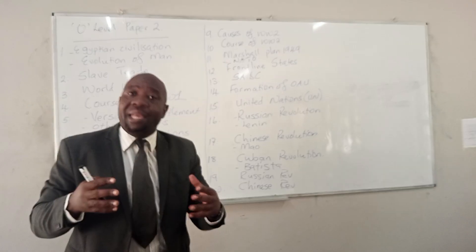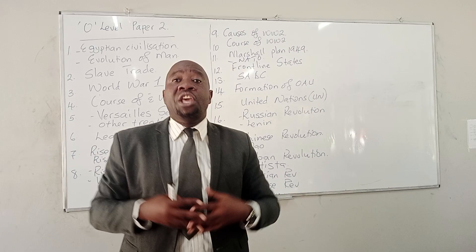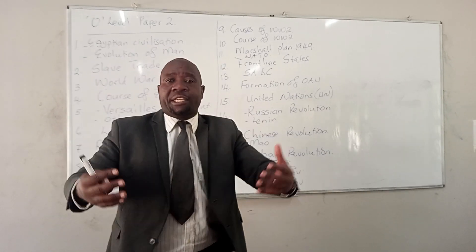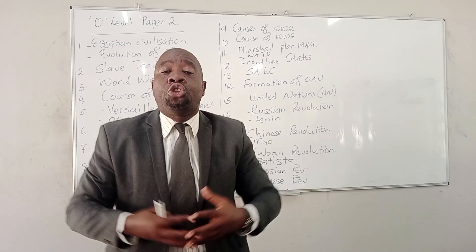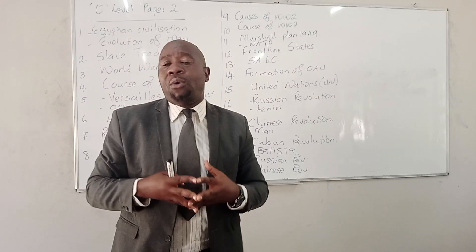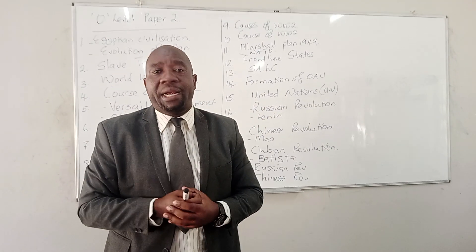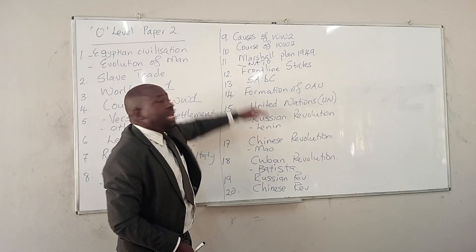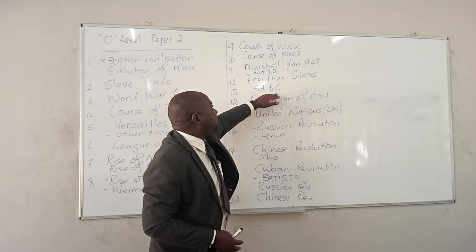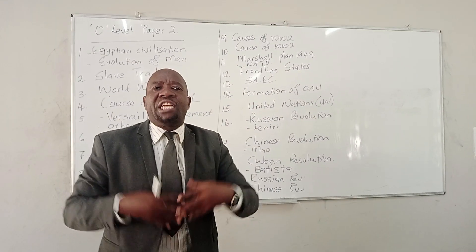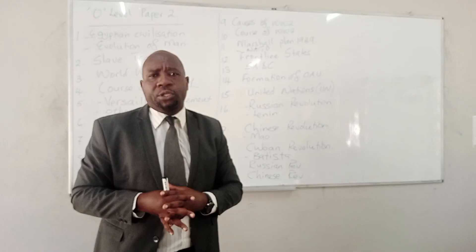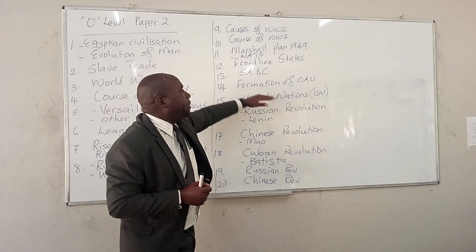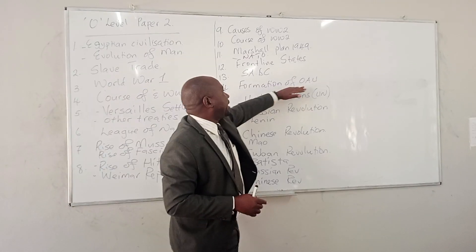Number eleven, they can ask you about the Marshall Plan and the formation of NATO. Number twelve, they can ask you about the frontline states — these are the states that assisted Zimbabwe during the liberation struggle. They assisted our soldiers and the country so that it would be liberated. A question might come on the roles played by the frontline states. Number thirteen can also ask you about SADC — the Southern African Development Community — asking you about the developments that took place and are being done in the SADC region.